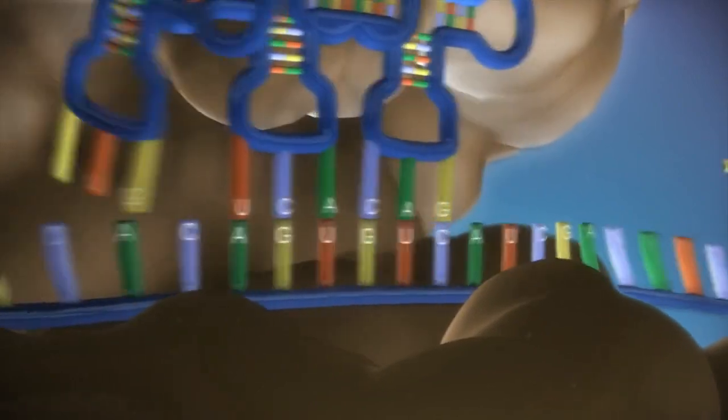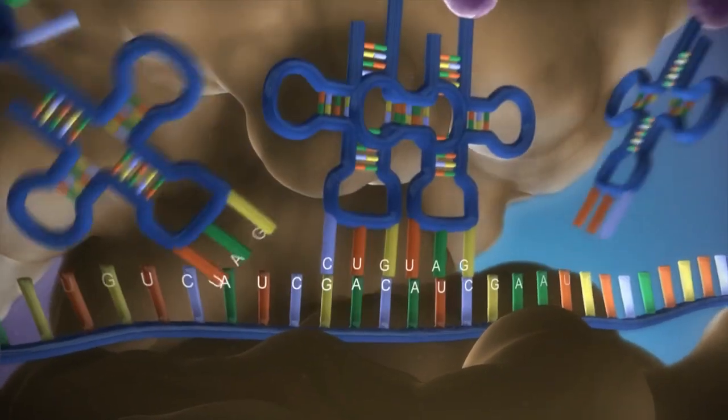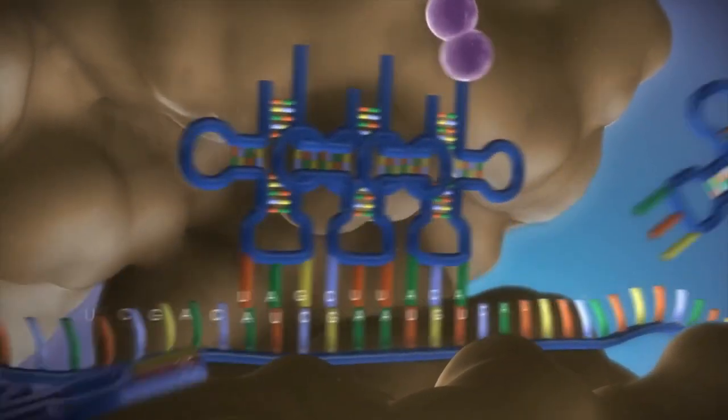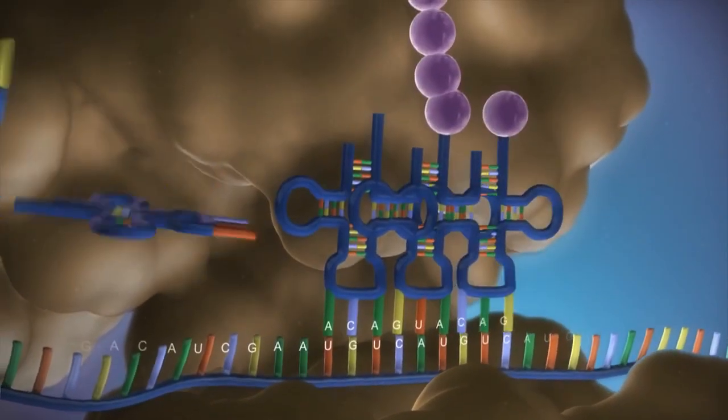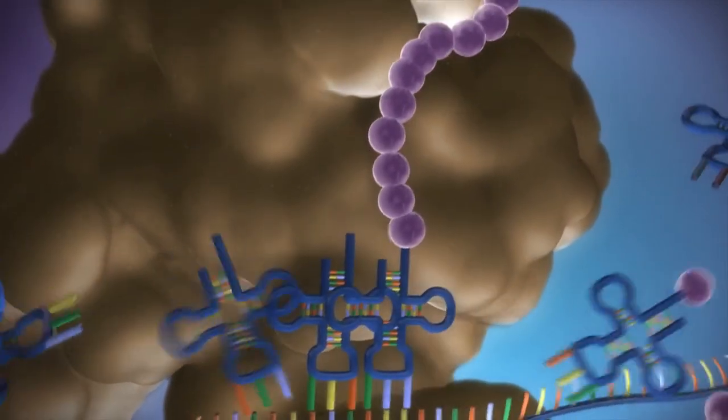The messenger RNA is read three bases at a time. As each triplet is read, a transfer RNA delivers the corresponding amino acid. This is added to a growing chain of amino acids.